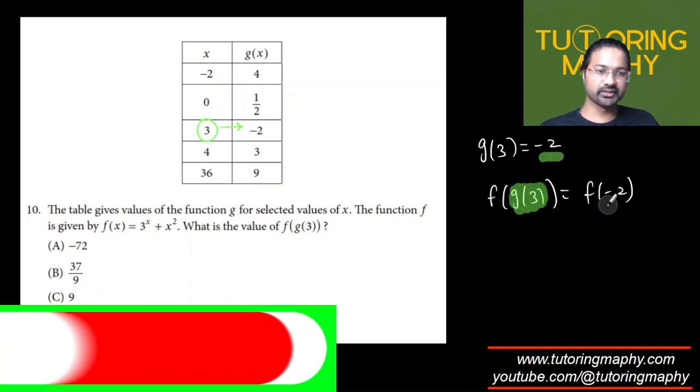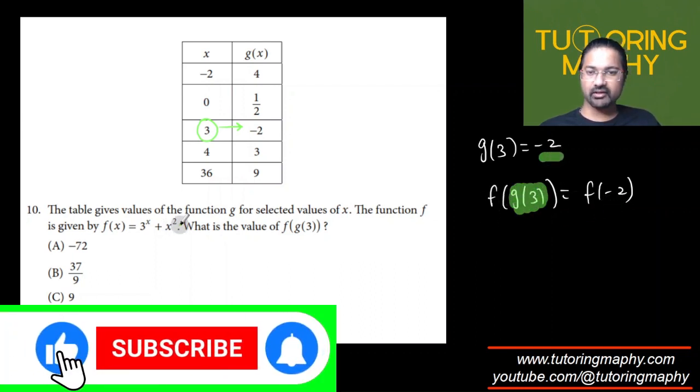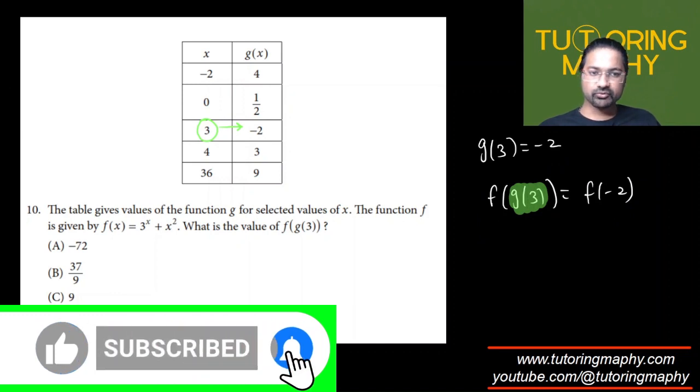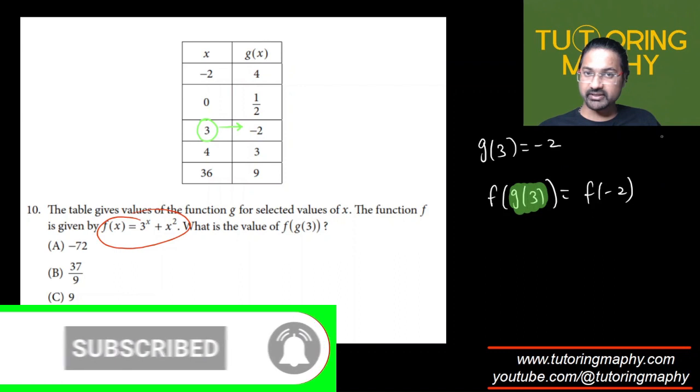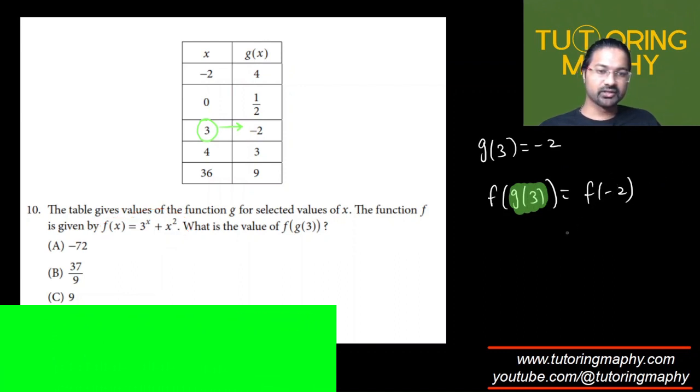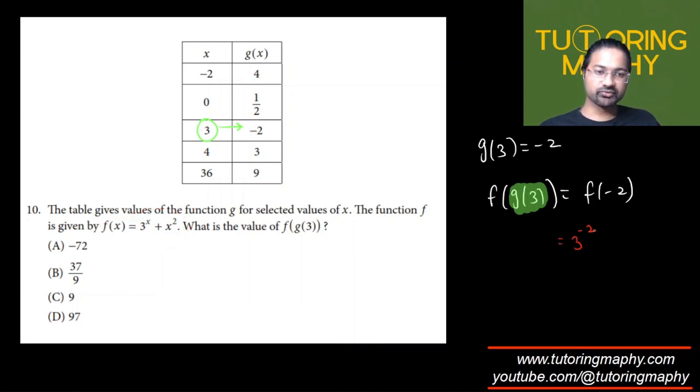What is f(-2)? We already know what f(x) is. All we need to do is replace x with negative 2. So it's going to look like 3 raised to negative 2, and then this base x is also replaced with negative 2, so that's negative 2 whole square.